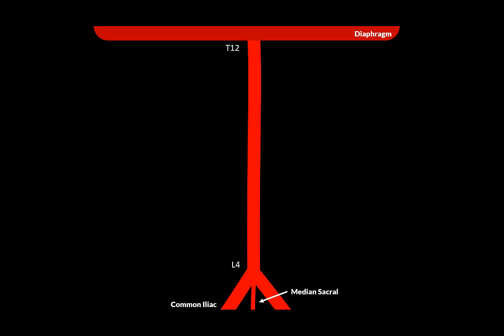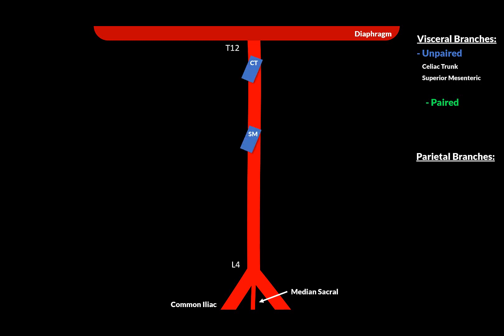The abdominal aorta has two groups of side branches: visceral and parietal branches. The visceral supplying the visceral organs, and the parietal supplying everything that's not the visceral organs. The unpaired visceral branches of the abdominal aorta are the celiac trunk, the superior mesenteric, and the inferior mesenteric artery.